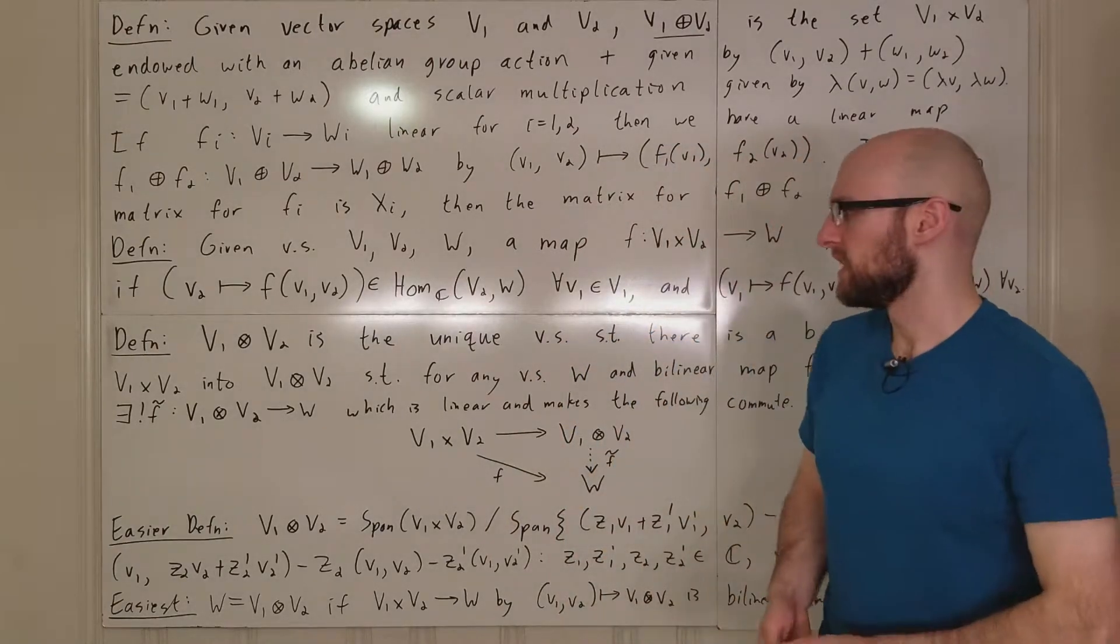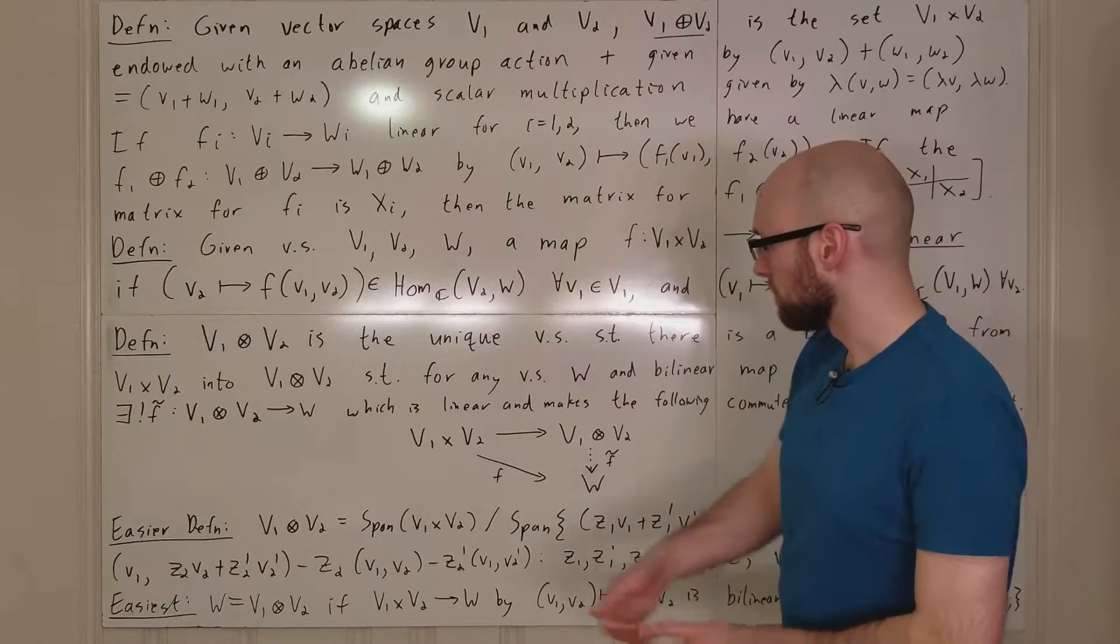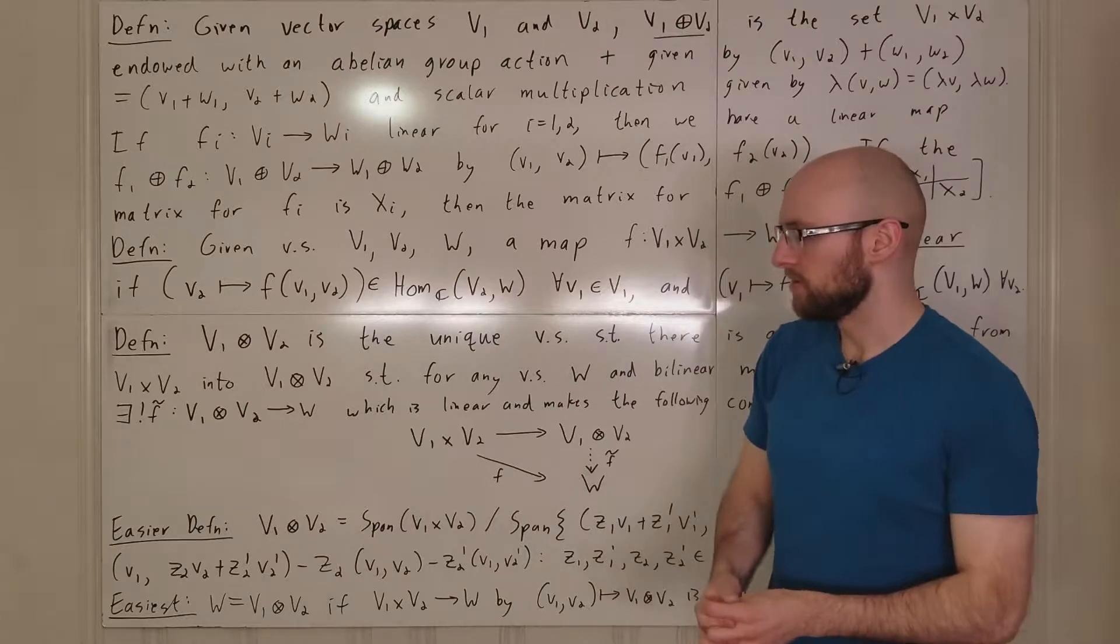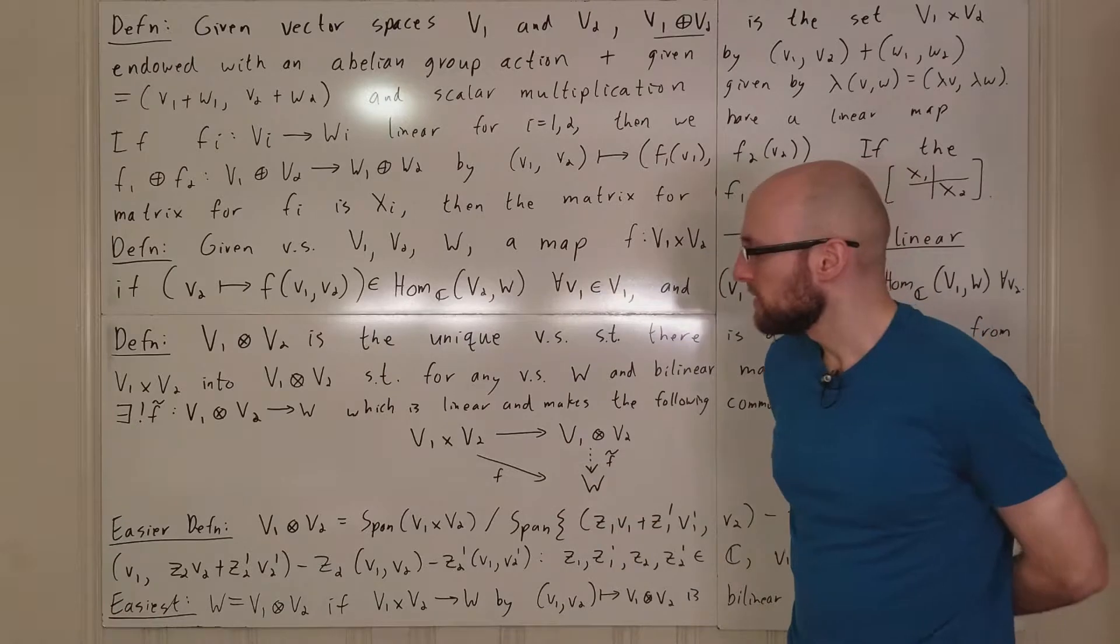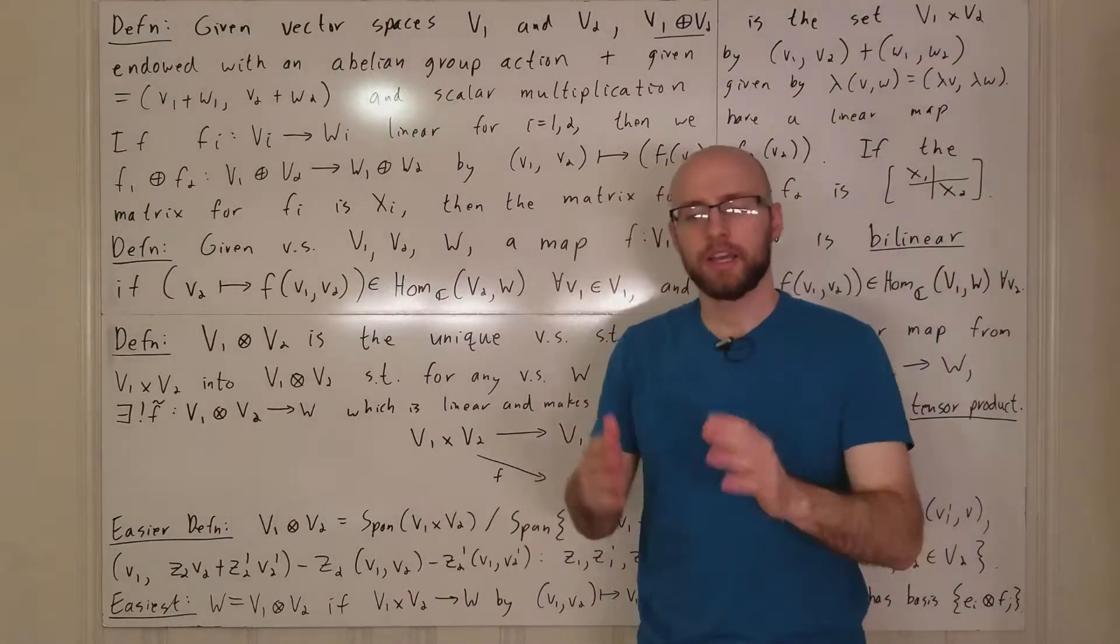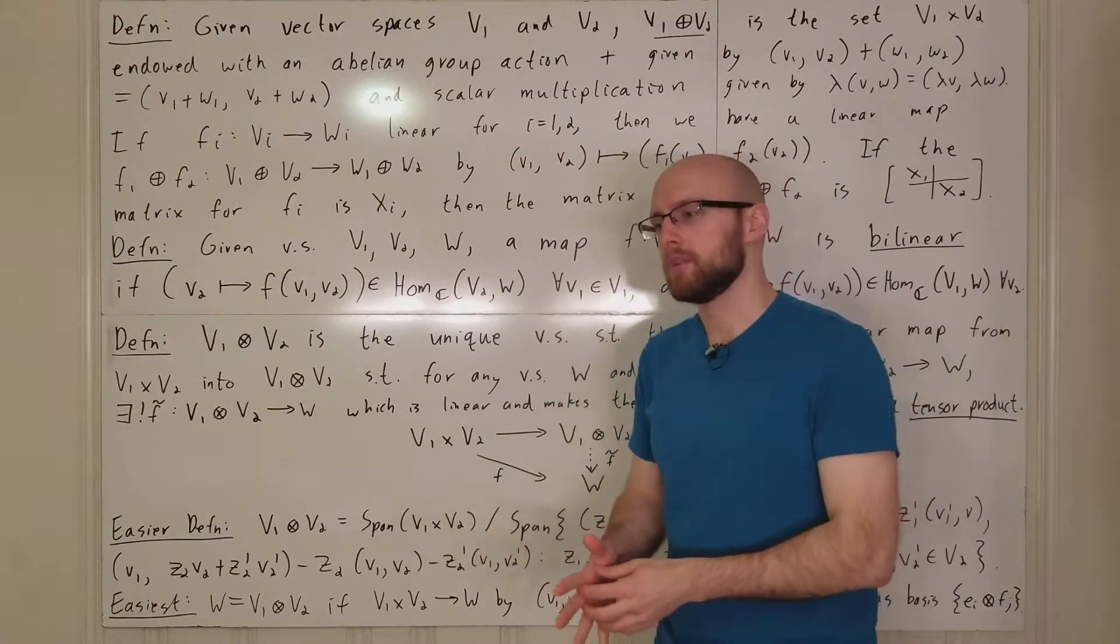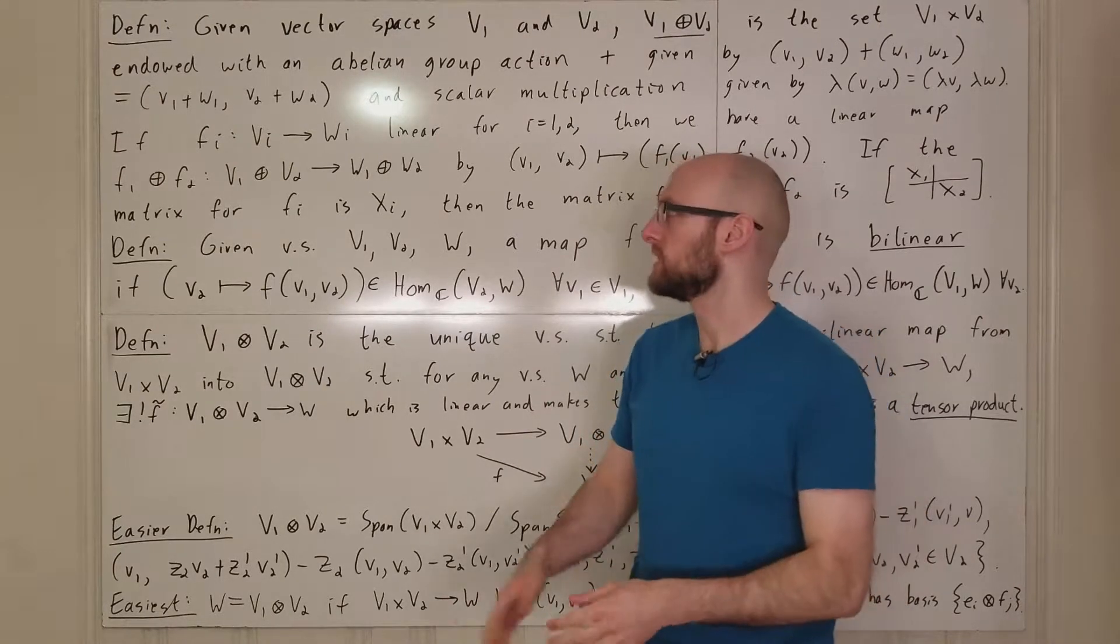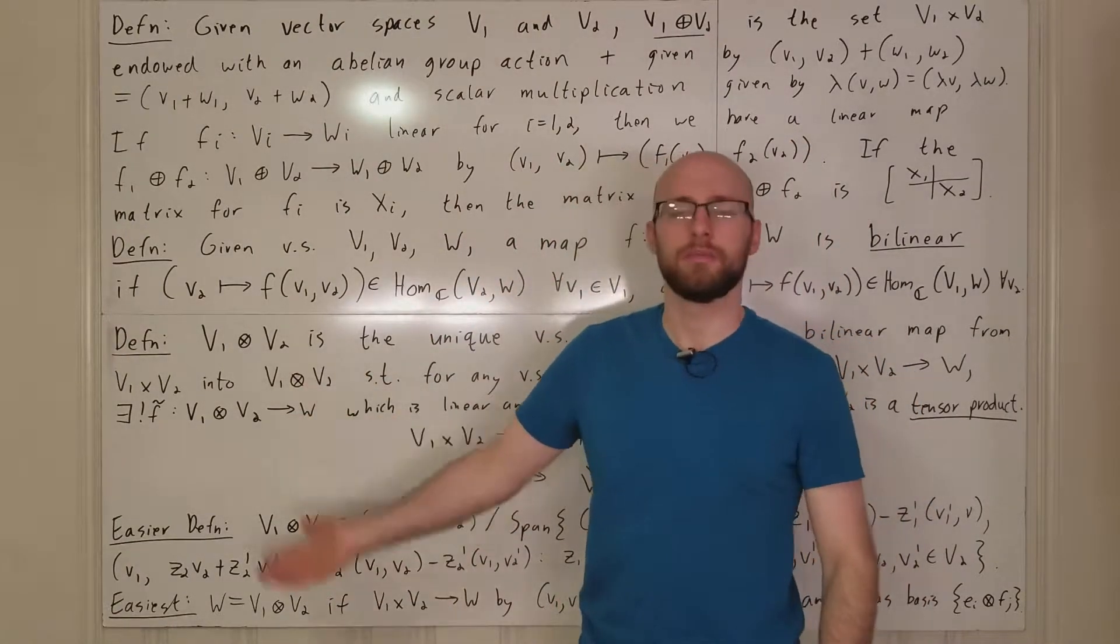So we call it the tensor product. That's one definition. Here's a little more concrete of a definition. What you can do is you start with the span of V1 direct sum with V2. And when I say span, what I mean is you consider it as a set, and then you consider, okay, well, we can take things and add them together, and we can also take things and multiply them by scalars in C. All of these scalars are going to be C. All these vector spaces are going to be over C.